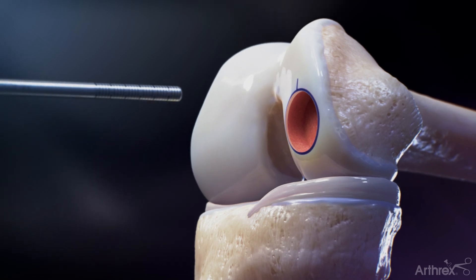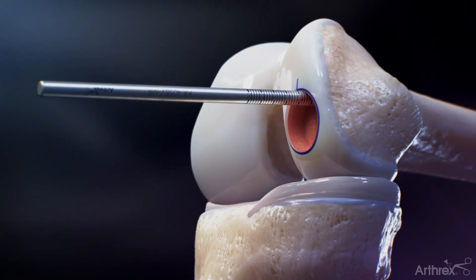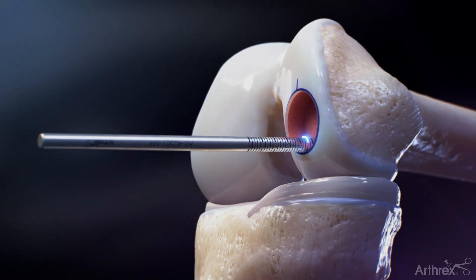Take depth measurements of the created socket from four quadrants and record them for use when creating the allograft core.